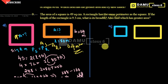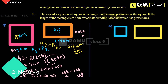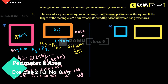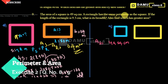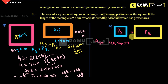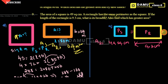Thanks for watching. So here our 9th question is: the area of a square is 49 square centimeters. A rectangle has the same perimeter as the square, and the length of the rectangle is 9.3 centimeters. What is its breadth? We also have to find which has the greater area.